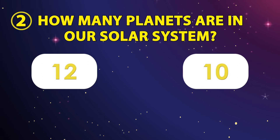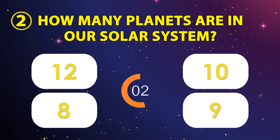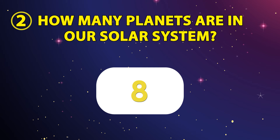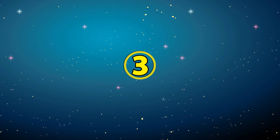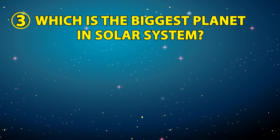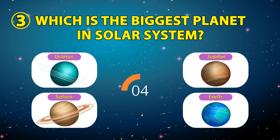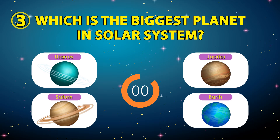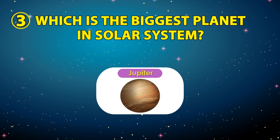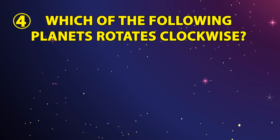The options are 12, 10, 9, or 8. The correct answer is 8. Number three: which is the biggest planet in the solar system? The options are Uranus, Jupiter, Saturn, or Earth. The correct answer is Jupiter. You're doing well!